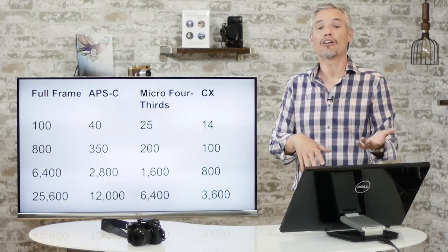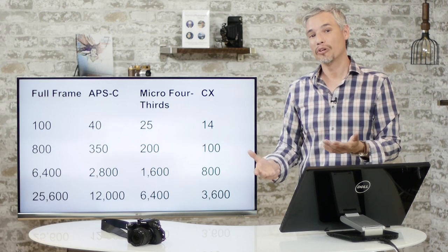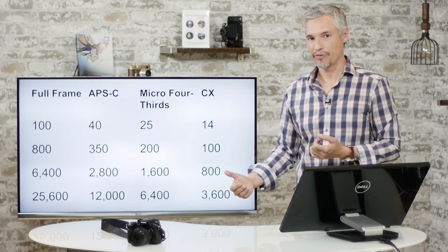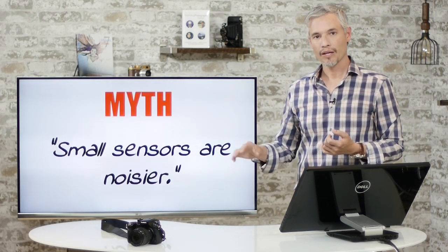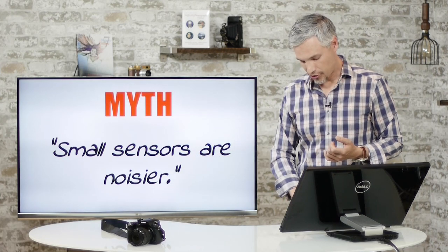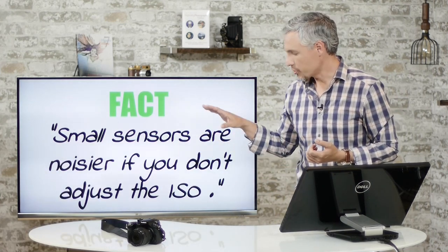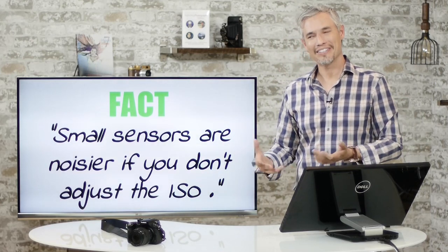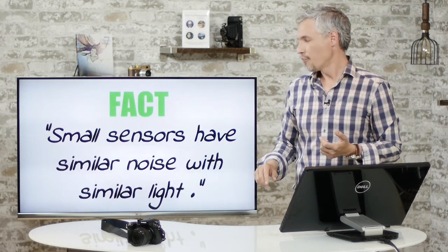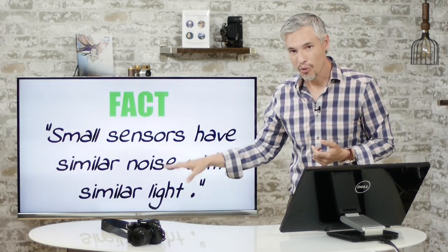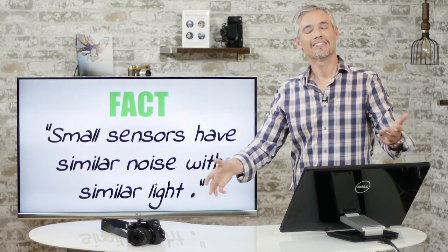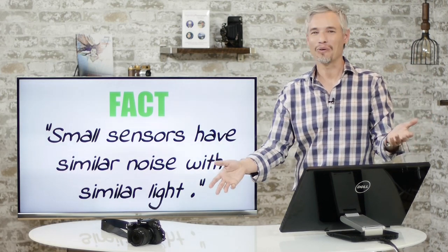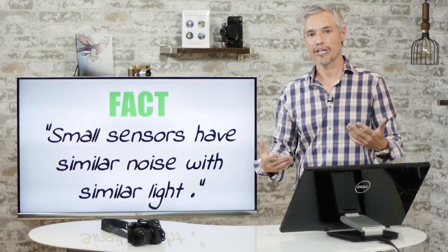The 80-year-old ISO standard isn't a meaningful constant when comparing different cameras. Instead of keeping ISO constant, we should keep total light gathered constant. Smaller sensors are always going to need a lower ISO to gather the same total light. If a micro four-thirds sensor is one-quarter the size of a full-frame sensor, it has four times less surface area — like a bucket four times smaller needing four times longer in the rain. Small sensors have similar noise when you give them similar total light. That's what cameras need — light, not an arbitrary ISO number.